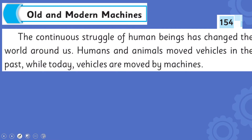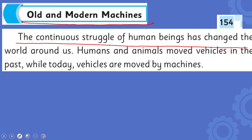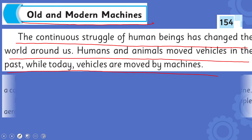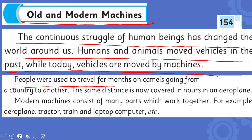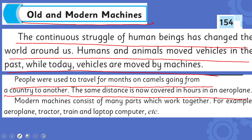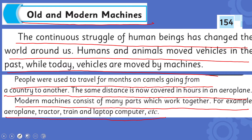I hope everybody has opened the page. Now let's start the reading — put your fingers where I read. Old and Modern Machines: The continuous struggle of human beings has changed the world around us. Humans and animals moved vehicles in the past, while today vehicles are moved by machines. People used to travel for months on camels going from one country to another. The same distance is now covered in hours by aeroplane. Modern machines consist of many parts which work together — for example, aeroplane, tractor, train, and laptop computer.